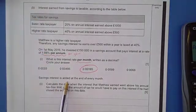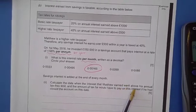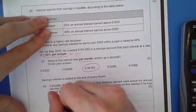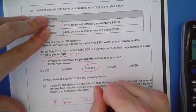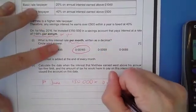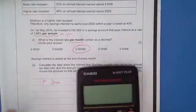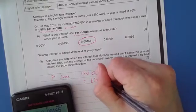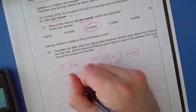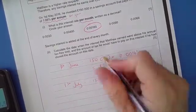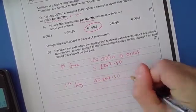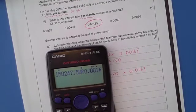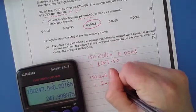It then says savings interest is added at the end of every month. Calculate the date when the interest that Matthew earned went above his annual tax-free limit and the amount of tax he would pay on the interest that he had. This was a tricky question. The way that I did it was I said, 1st of June would be £150,000, and you would times it by that decimal to work out exactly how much interest he accumulated in the first month. So £150,000 times by 0.0165, and he got paid £247.50. On the 1st of July, he would have then had that interest added onto it. So he has not £150,000, but £150,247.50, and we times that again by that interest rate, using the replay button on my calculator. That comes to £247.91.